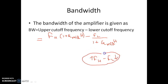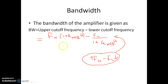As the higher cutoff frequency increases and the lower cutoff frequency decreases for the amplifier with application of negative feedback, we can say that the bandwidth of a negative feedback amplifier — that is, the bandwidth with the application of a negative feedback scheme — increases.